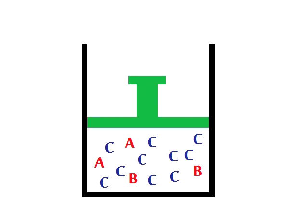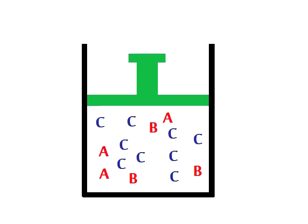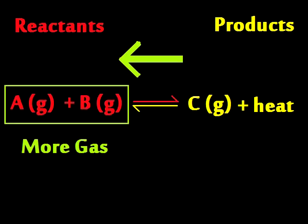If you raise the pressure, the side with less gas will score. If instead you lower P, shift to the side with more.